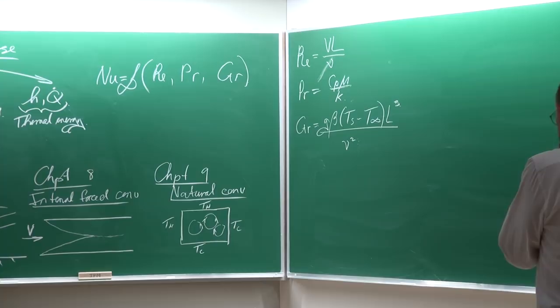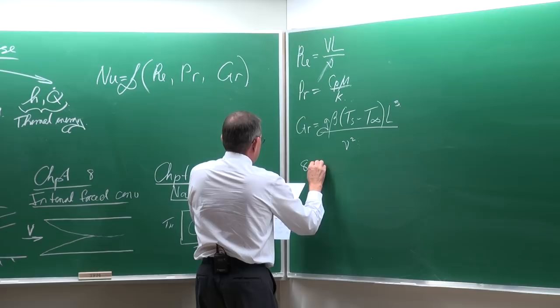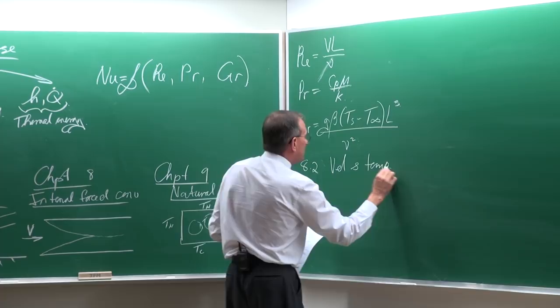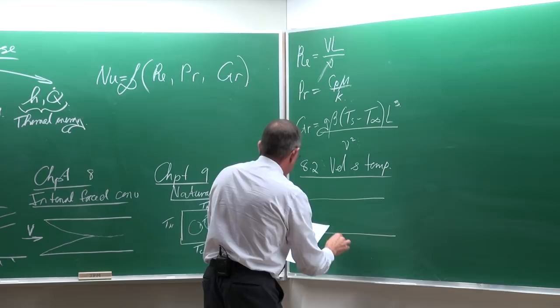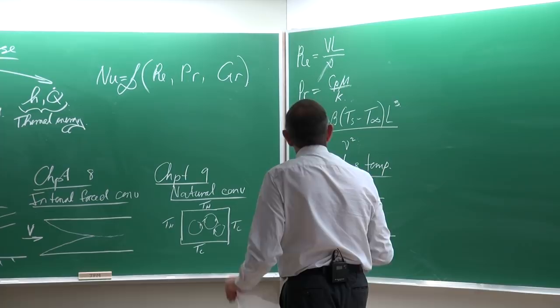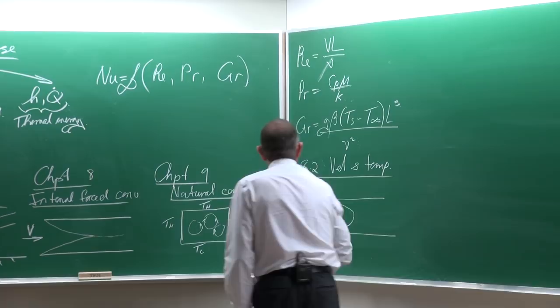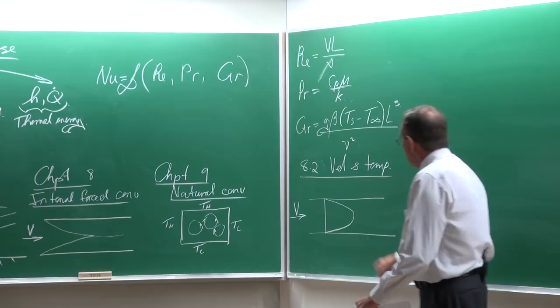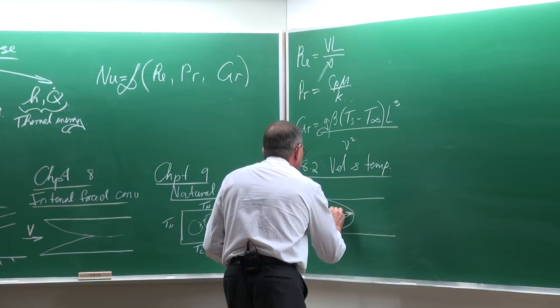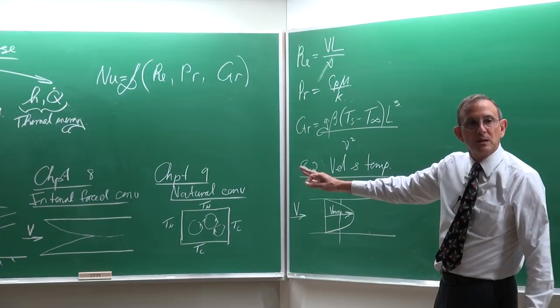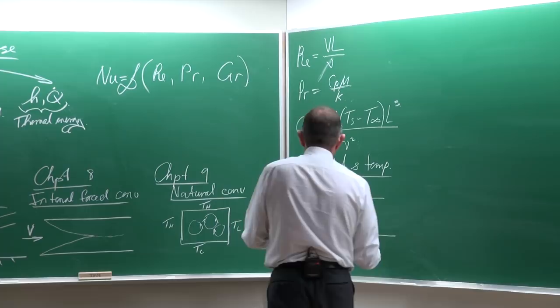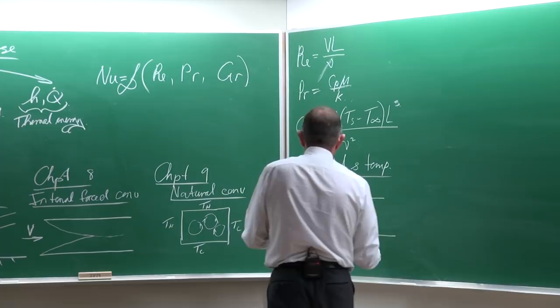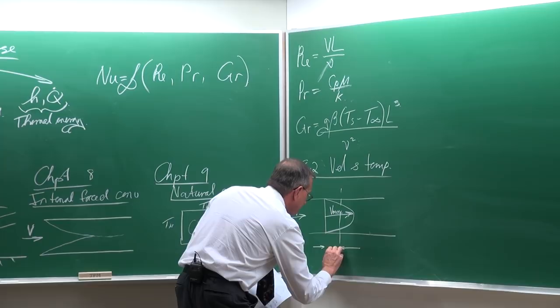Paragraph 8.2 is about the average velocity and temperature, which we are going to handle differently than external forced convection. From fluid mechanics you know that if that is the tube, you're going to get a velocity distribution. With the no-slip boundary condition, the velocity increases to a maximum velocity V_max. In most cases in heat transfer, we will not be interested in this velocity profile — we would like to be practical and make things simple, so we are rather going to use the average velocity V_average.